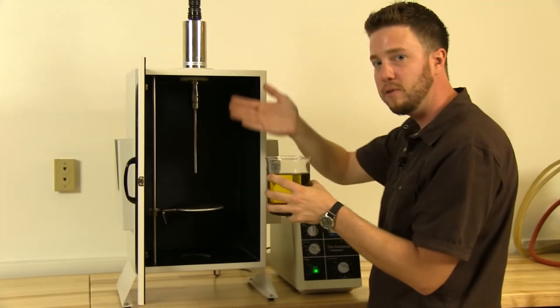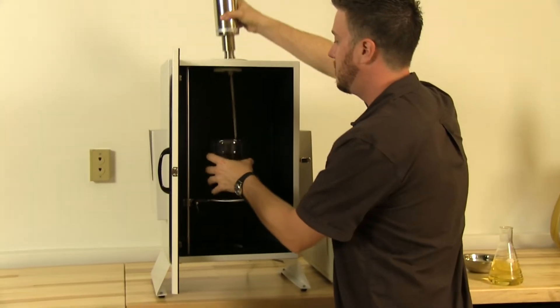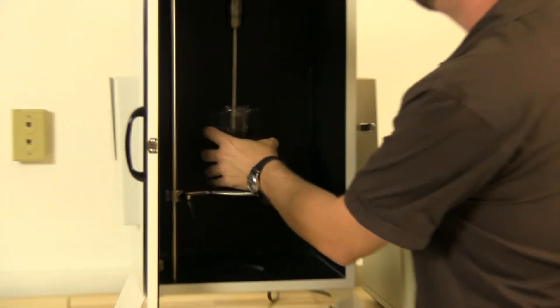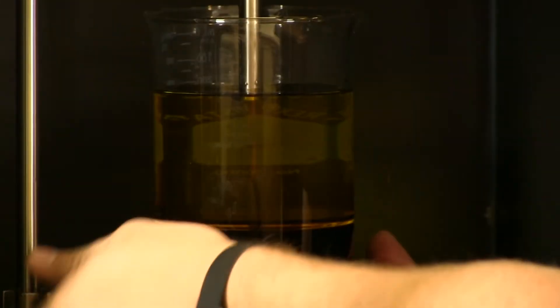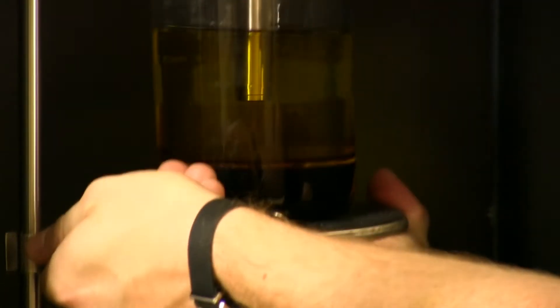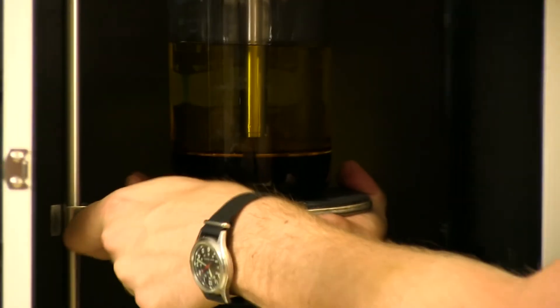When you're normally doing a vinaigrette, you would have some sort of an emulsifier. That would be in the form of eggs, honey, mustard. But you don't even need that with the sonic prep.